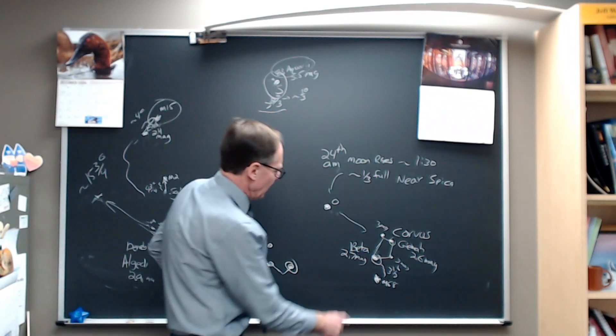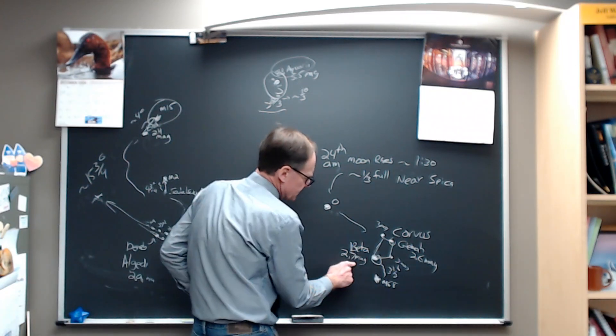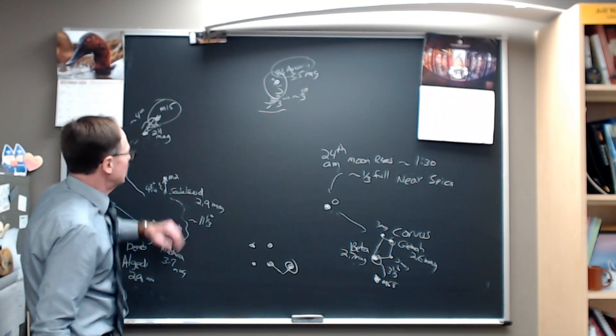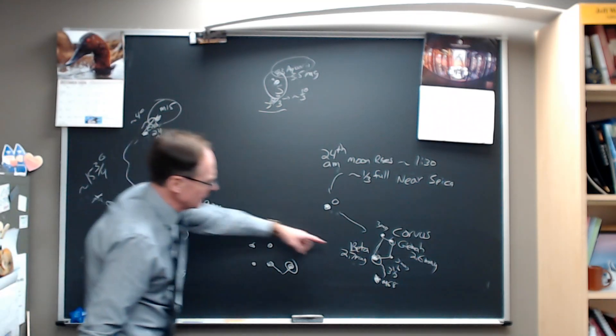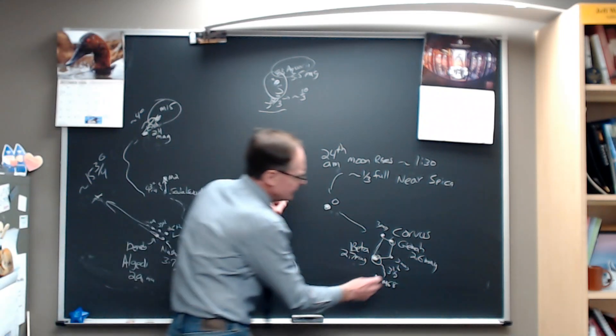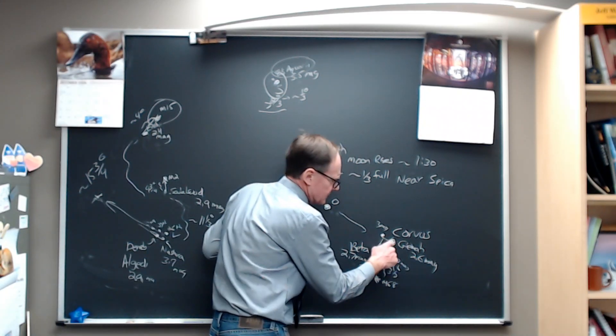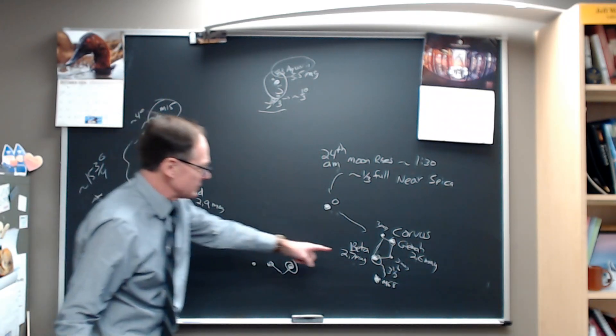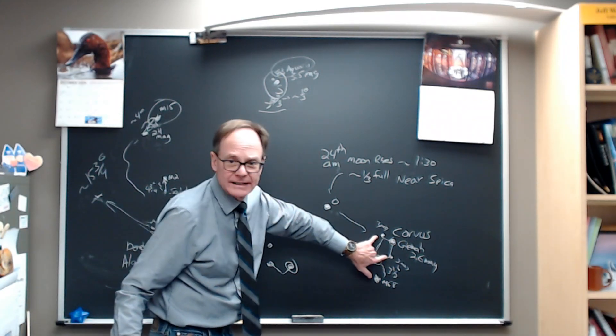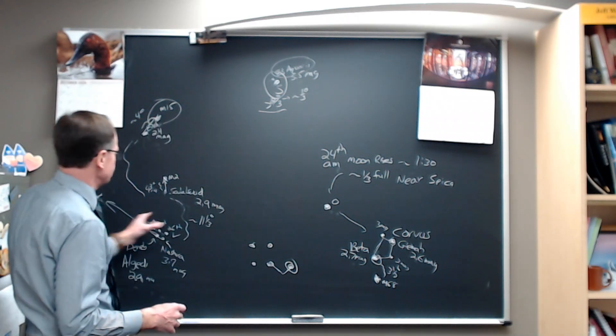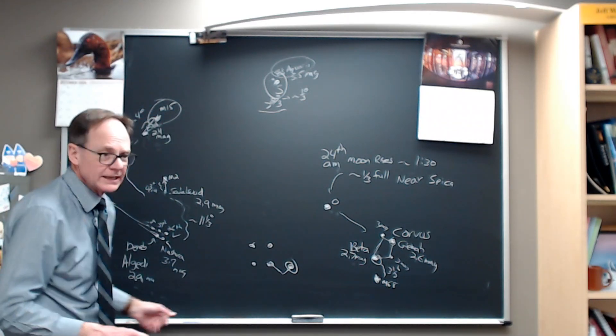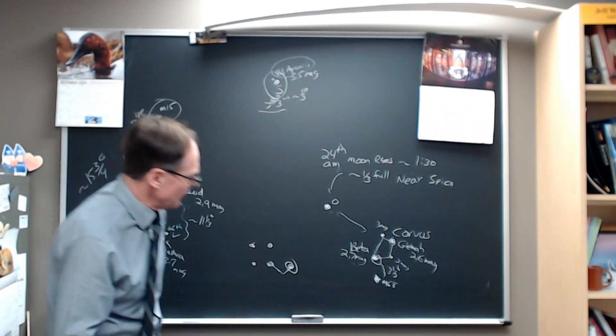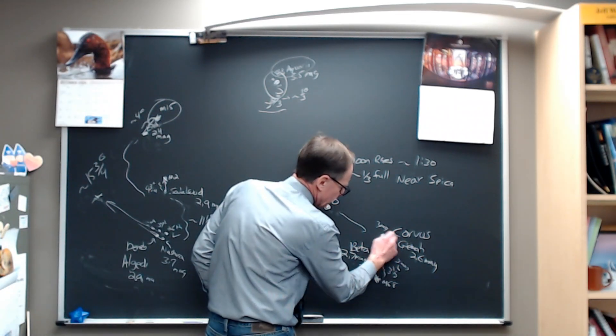I see Corvus pop out as this quadrilateral here. You've got this quadrilateral. The brighter stars are the beta star down here, which is 2.7 magnitude, a little bit brighter than Deneb Algedi and Sadal-Sut, a little bit fainter than Enif. And Gemma, the gamma star that's up in this corner, is 2.6 magnitude. So those two are brighter than the rest. These are 3rd magnitude stars. So all four of these stars are comparable to the brighter stars we've been looking at.